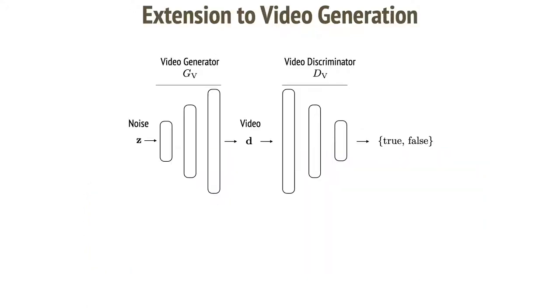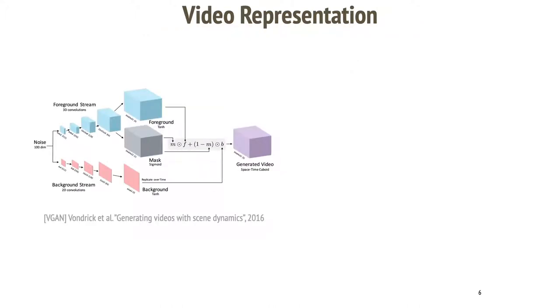To generate videos, a straightforward extension of such system can be made in which each point of the latent space will correspond to a video. Temporal discriminator can tell if the video looks good. There were several methods that propose that.